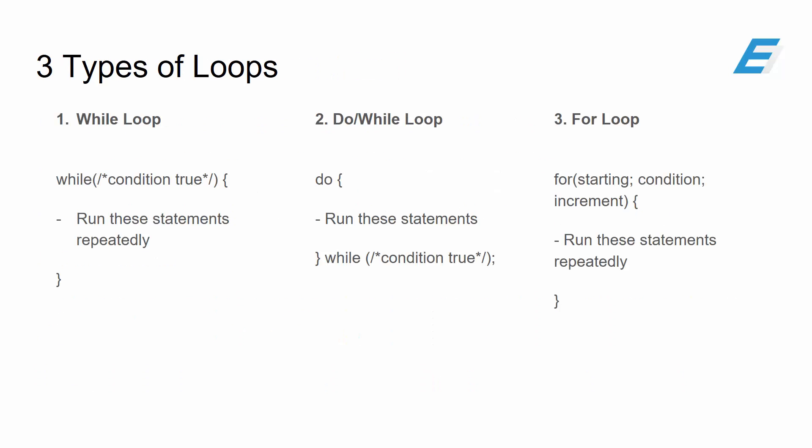There are three types of loops in C++: the while loop, the do while loop, and lastly the for loop. Despite their similarities in being loops, they each have their own unique differences and characteristics.